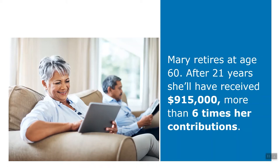For Mary, retiring at age 60 makes the most sense based on her personal situation. Now let's consider the total value Mary may receive from Hoop. Assuming she retires at age 60 and lives for 21 years in retirement, she'll receive a total of $915,000 from Hoop in return for her total contributions of $150,000 — that's more than six times her contributions. Most importantly, Mary won't outlive her Hoop pension. She has peace of mind knowing that she will receive regular monthly pension payments for the rest of her life, and this doesn't include any cost of living adjustments she may be entitled to receive in retirement.